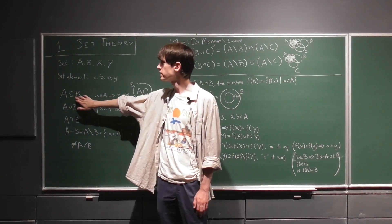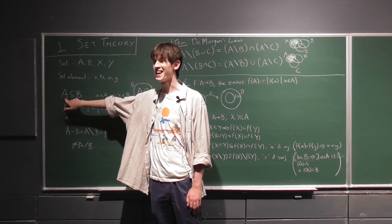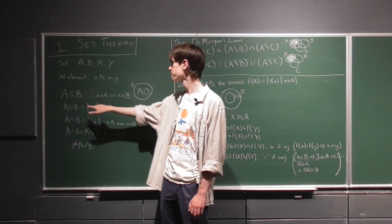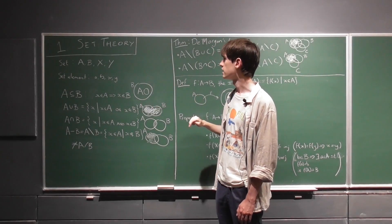This symbol here is an inclusion, so it just means that any element of A is also an element of B. In the Venn diagram, this is what it would look like - A is just contained in B.